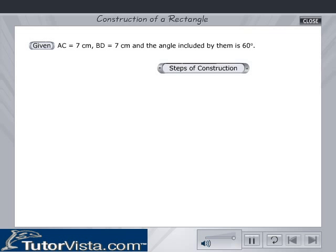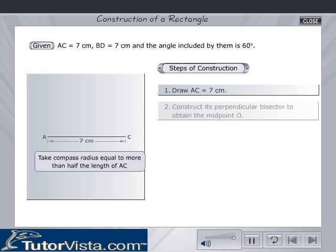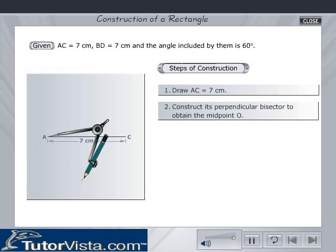The steps of construction are as follows. Draw AC is equal to 7 cm. Construct its perpendicular bisector to obtain the midpoint O.